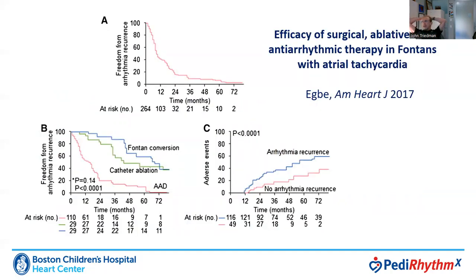Dr. Egby has recently published a comparison of the efficacy of surgical and ablative therapy in Fontans with atrial tachycardia compared to antiarrhythmic drugs. The lower left graph shows Fontan conversion is very slightly more effective than catheter ablation — not much given the numbers involved — and both are clearly superior to antiarrhythmic drug therapy.